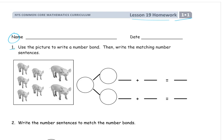Number one, use the picture to write a number bond. That's the first thing we're going to do. Then after that we write the matching number sentences. So we're looking at this picture. We have a group of two large pigs and one, two, three, four, five piglets.